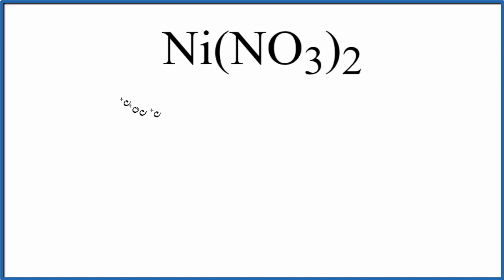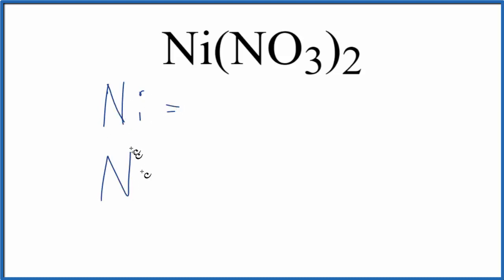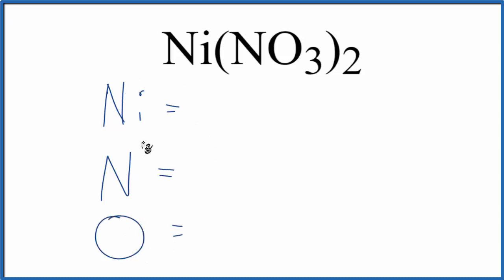So let's write the elements down. First, we have nickel, Ni, and then we have nitrogen and oxygen. So we have these three elements here.